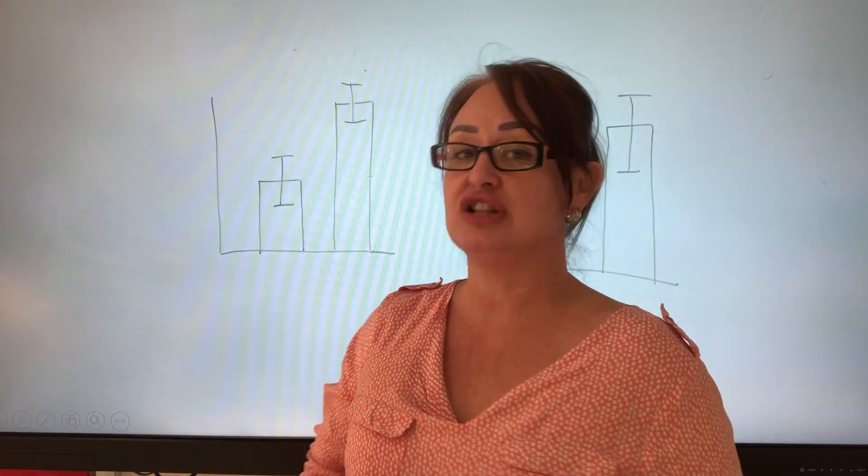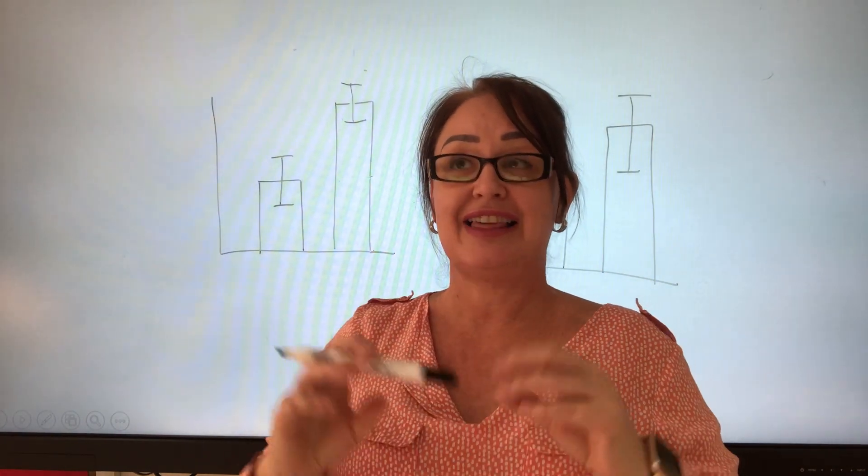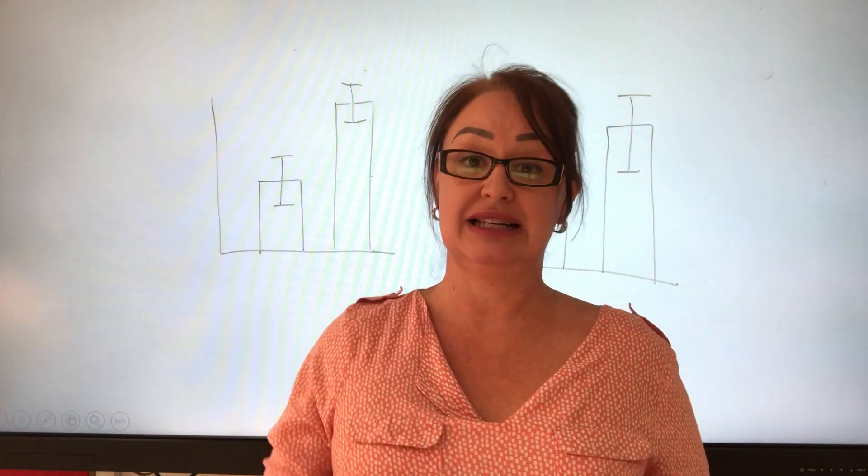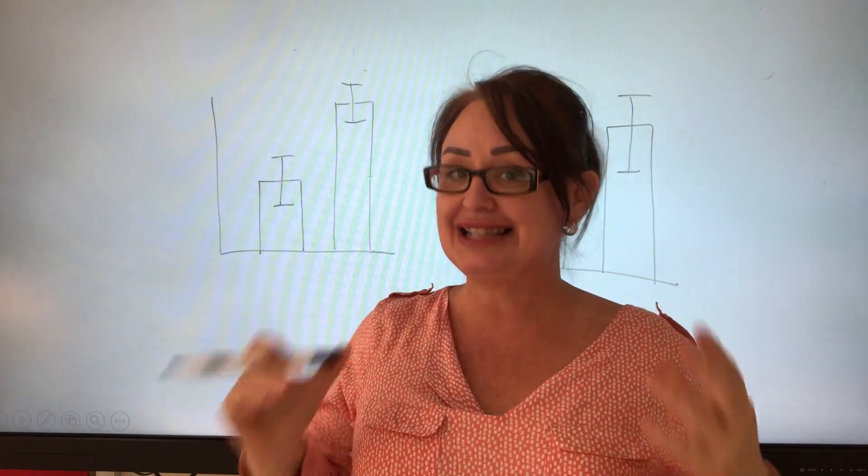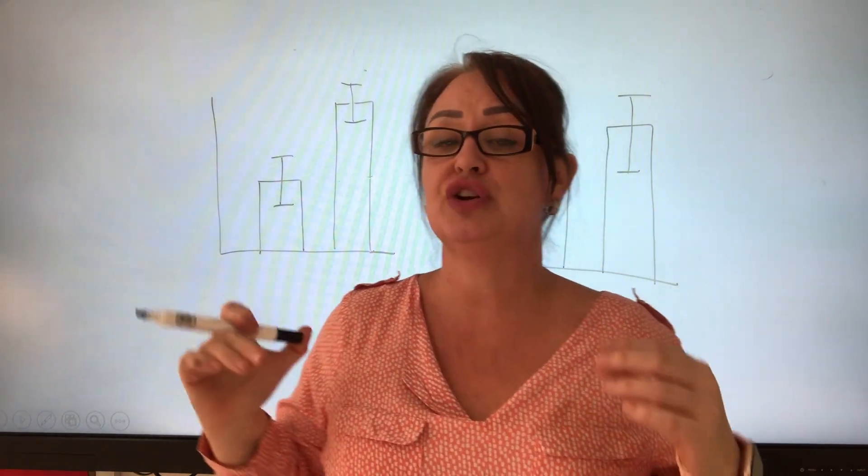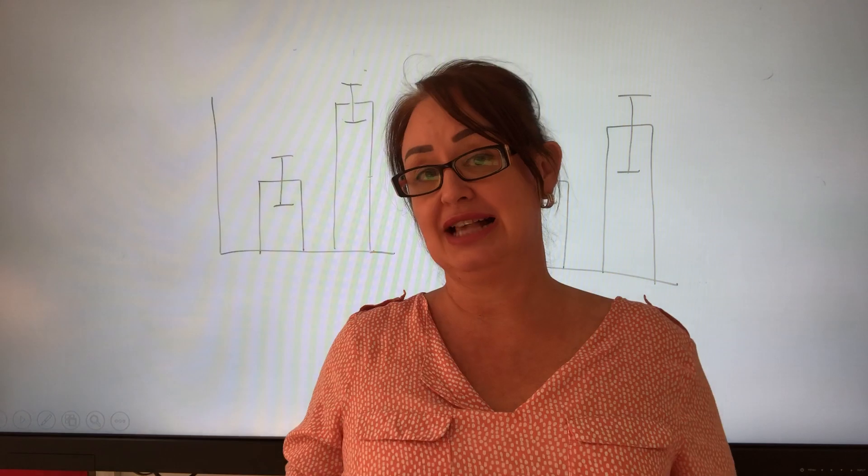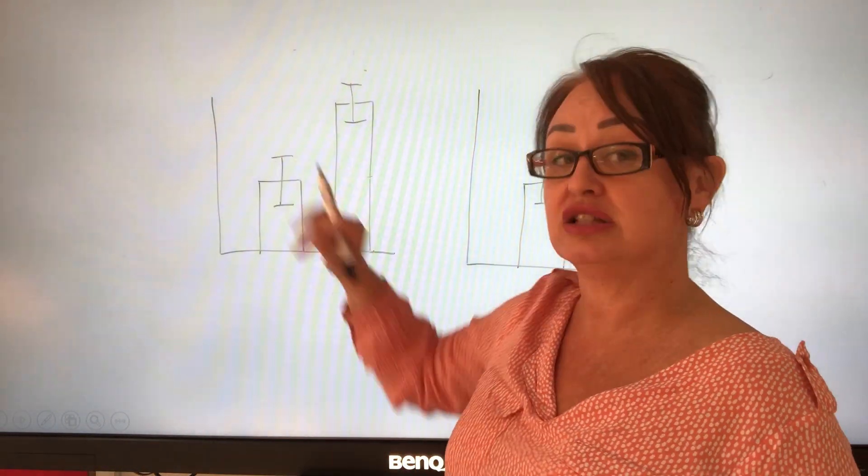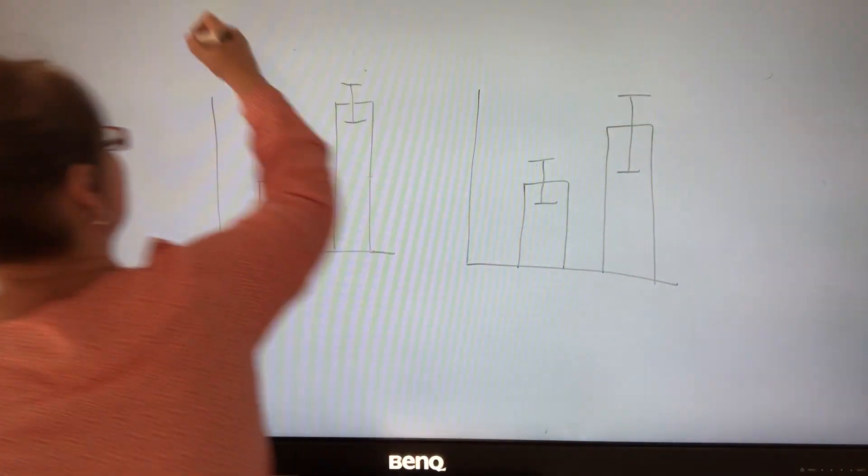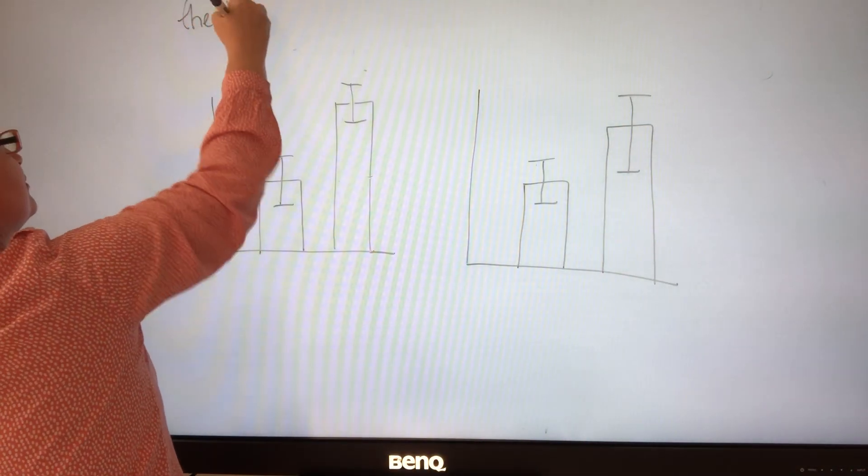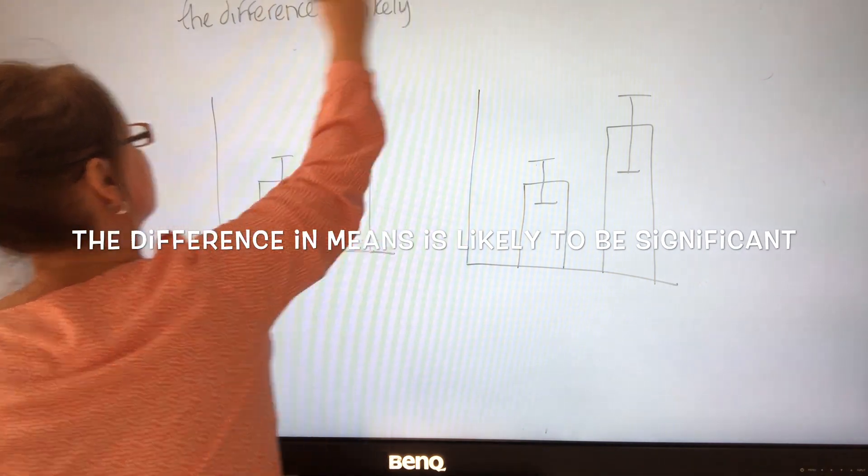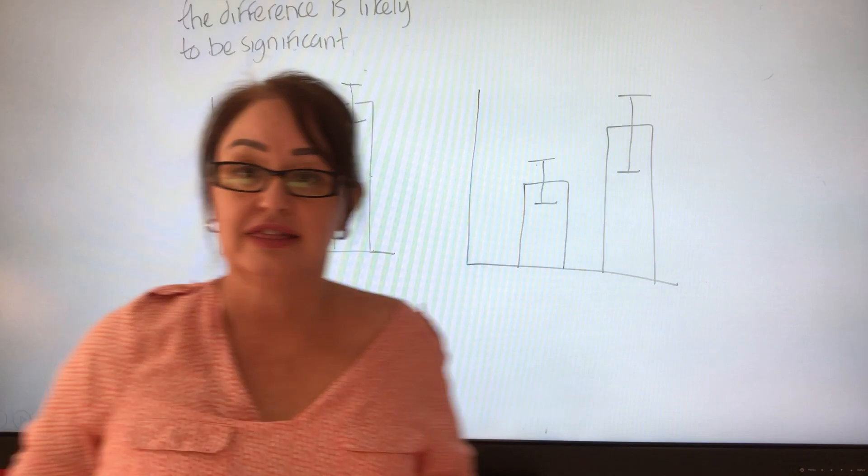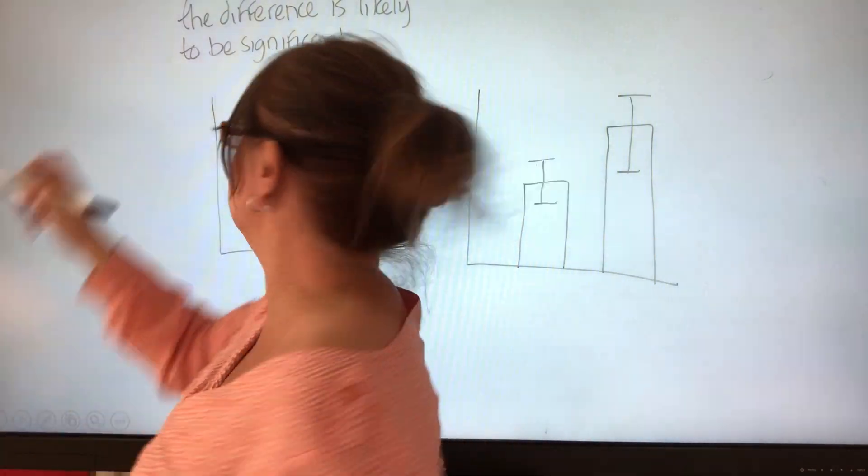If the error bars don't overlap, it means that there is a good chance that the difference between these means is different. But we can't say it's different until we've done further statistical tests. So what we're going to say is, just looking at the standard deviation where the bars don't overlap, that the difference is likely to be significant.